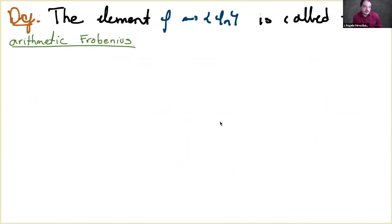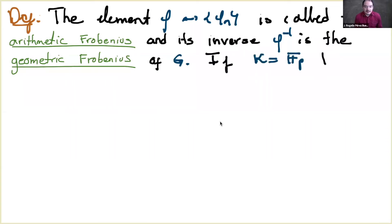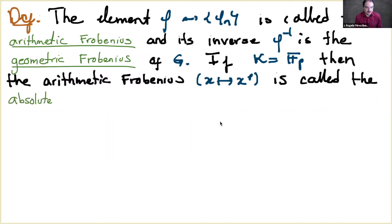The element φ, understood as the sequence of Frobenius automorphisms, is called the arithmetic Frobenius. We also consider the inverse of this, which is called the geometric Frobenius. If the base field K is the prime field 𝔽_p, then this arithmetic Frobenius is called the absolute Frobenius.